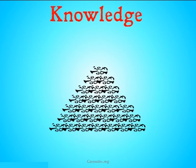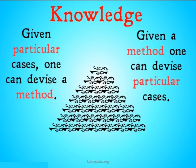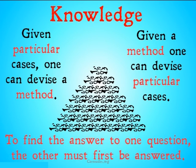The problem, of course, is that we are given neither a particular case nor a method. If we were given either, we could figure out the other one. But because we're given neither, we're stuck in a loop of trying to determine one without having the other. To find the answer to one question, one must first find the answer to the other.